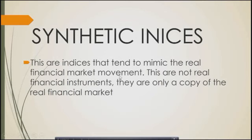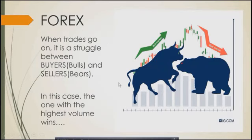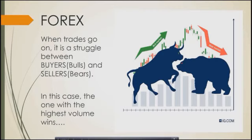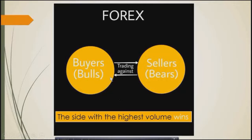Now in forex, when trades go on, it is a struggle between the buyers and the sellers — the bulls and the bears. The side with the highest volume wins. Let's say Mr. A buys USD/CAD and Mr. B sells USD/CAD — it is a struggle between them. The market goes up and comes down because of this struggle; the strongest side wins, and the side with the highest volume wins.